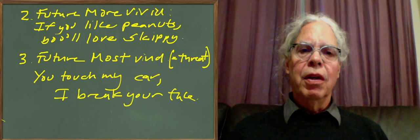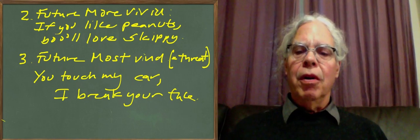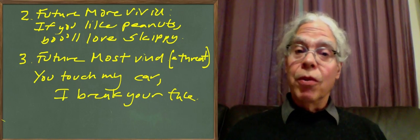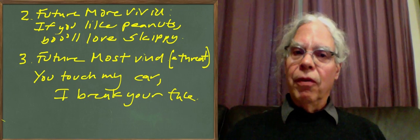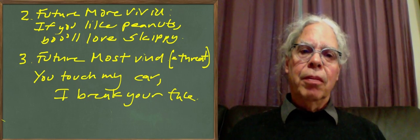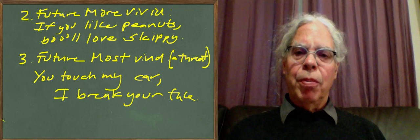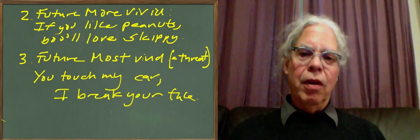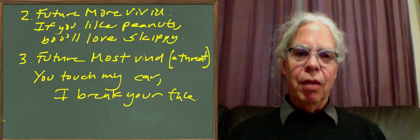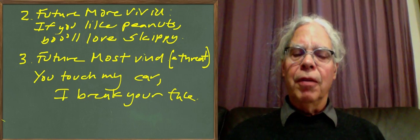There are two other types: the future more vivid and the future most vivid. Future more vivid is of the type of the Skippy peanut commercial. If you like peanuts, you'll love Skippy. There's an element of futurity in it. Again, it's making an inference from a supposition, and it has a kind of cachet of being something that's really true. But again, it's a hypothesis and an inference, and it's different from the others that we've been looking at.